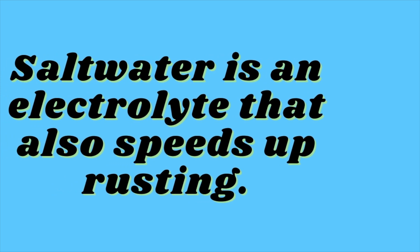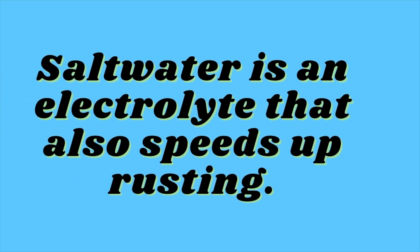Rusting happens faster when iron comes in contact with a high amount of moisture. Another reason is the presence of salt in the atmosphere — salt water is an electrolyte which conducts ions, speeding up the rusting. The salt solution acts as an electrolyte allowing the iron to lose electrons more easily. So moisture is the root cause of rusting, but the presence of salt in the atmosphere can speed up the rusting process even more.